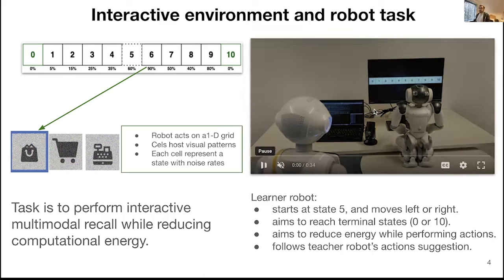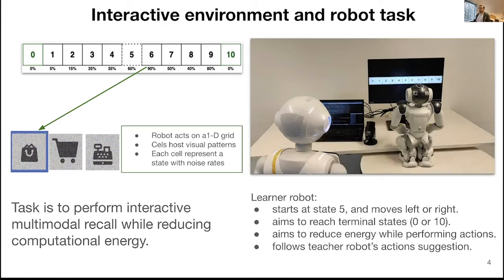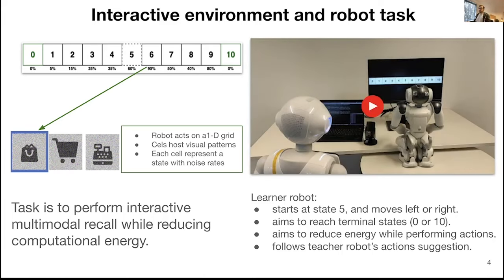As you see in the video, the learner robot always starts in the middle of the grid, which is state 5. It can move either left or right, and it aims to reach one of the terminal states, like state 0 and state 10. During this experiment, it interacts with the teacher robot.